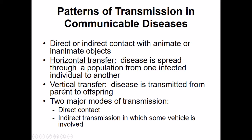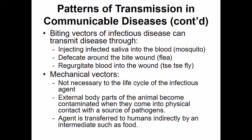Regardless of whether it's horizontal or vertical transfer, they can be done with direct or indirect contact via animate or inanimate objects. There are two major modes of transmission: direct contact and indirect transmission. Direct contact is relatively straightforward — the infected individual, the carrier, comes in physical contact with the person receiving the disease. Indirect transmission, though, is more common; there's going to be some kind of vehicle or fomite involved.